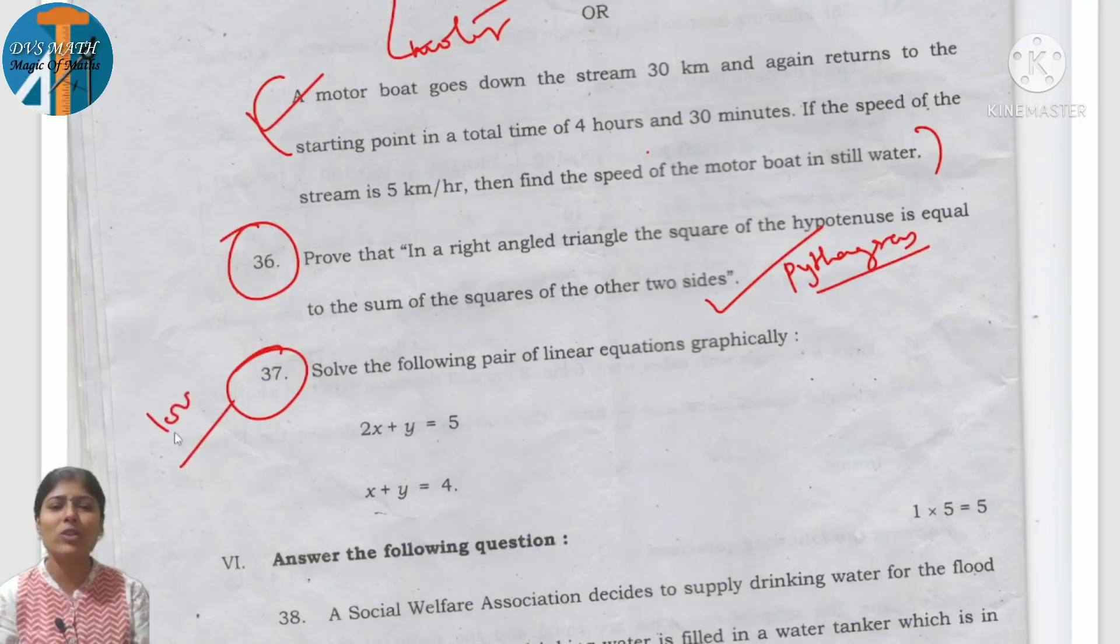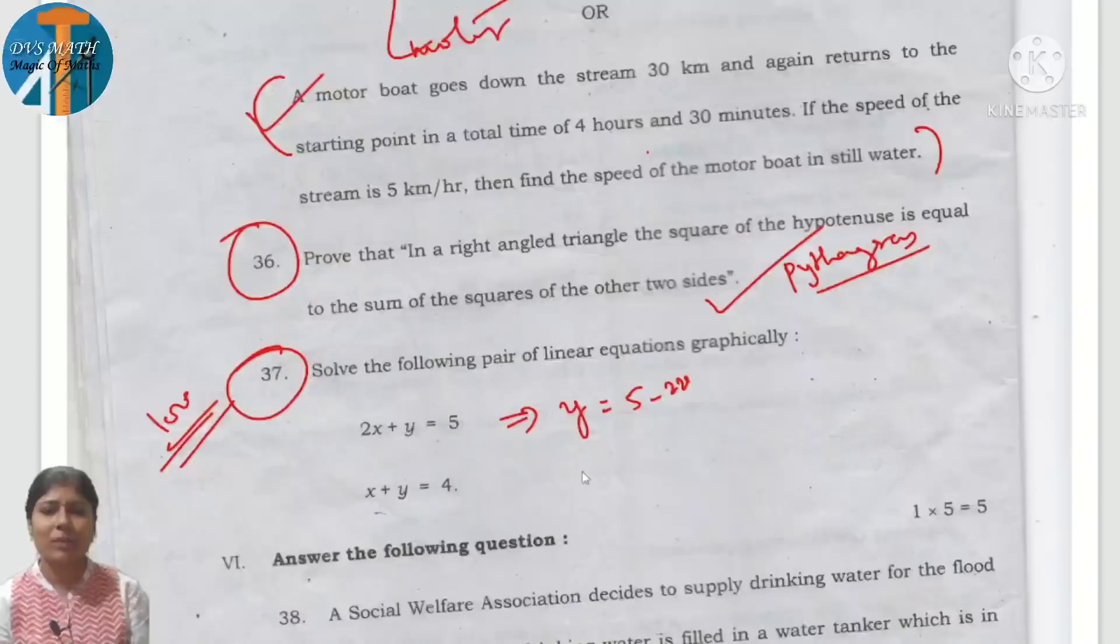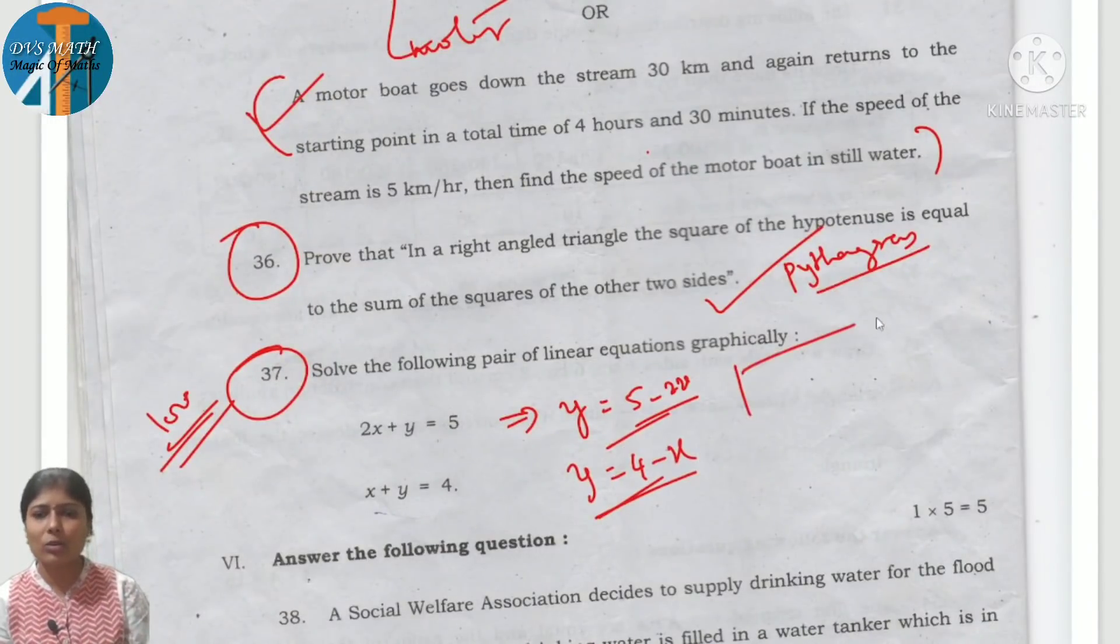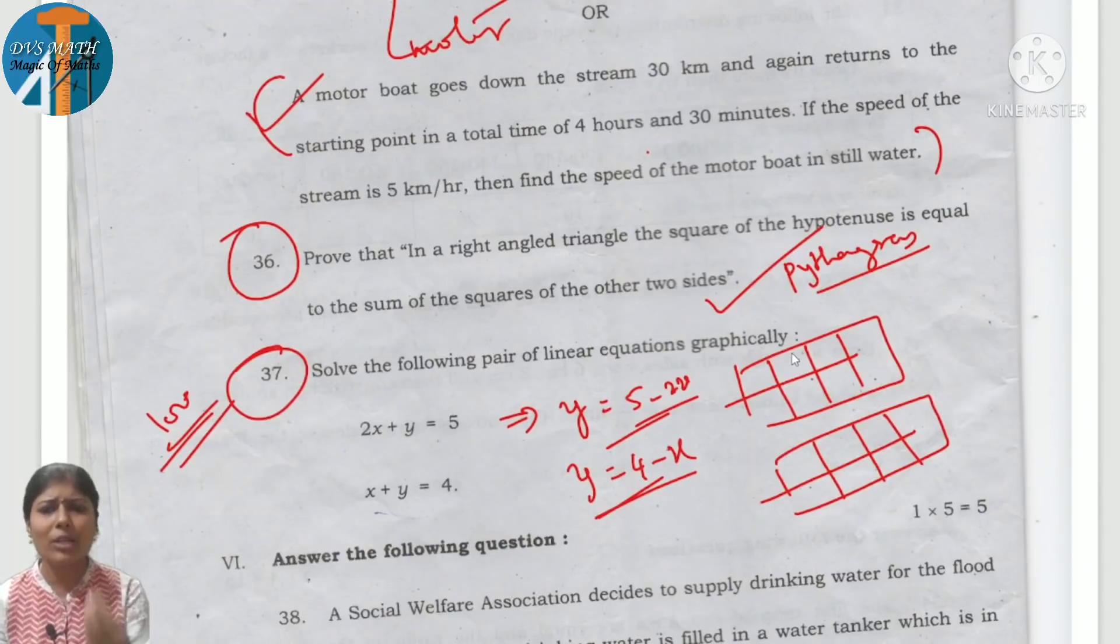Next, this is 100% question. Solve graphically. Both equations are positive, no confusion. This equation becomes y equals 5 minus 2x. This becomes y equals 4 minus x. Put in a box. Take 3 values. I am going to take 0. If 0, 5 minus 0 is 5. 1: 2 times 1 is 2, 5 minus 2 is 3. If 2: 2 times 2 is 4, 5 minus 4 is 1.